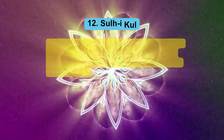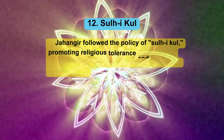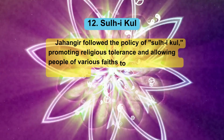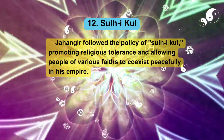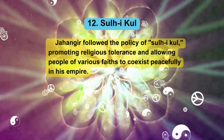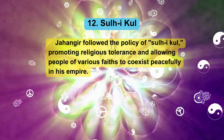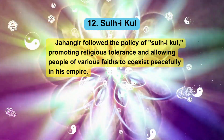12. Sulh-i-Kul. Jahangir followed the policy of Sulh-i-Kul, promoting religious tolerance and allowing people of various faiths to coexist peacefully in his empire.